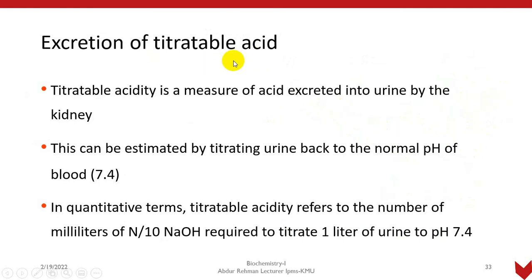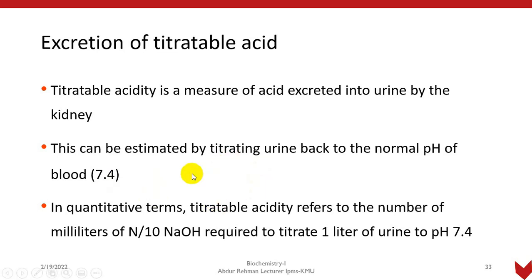The third mechanism is excretion of titratable acids. Titratable acidity is the measure of acid excreted into urine by the kidney — that is, the amount of acid excreted into urine with the help of the kidney. This can be estimated by titrating urine back to the normal pH of the blood. We add base back until the urine pH returns to 7.4, which is the blood pH. This is referred to as titrating capacity.